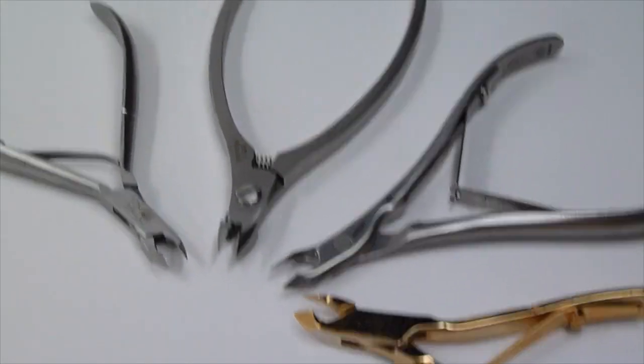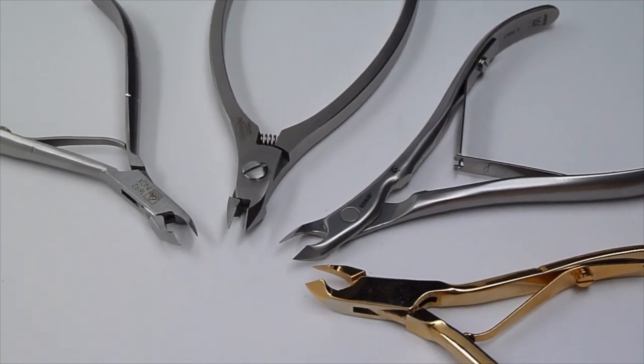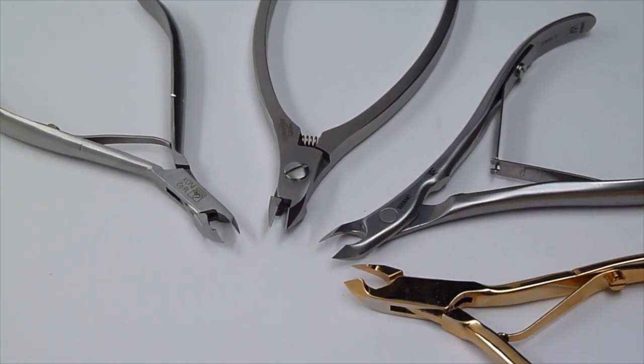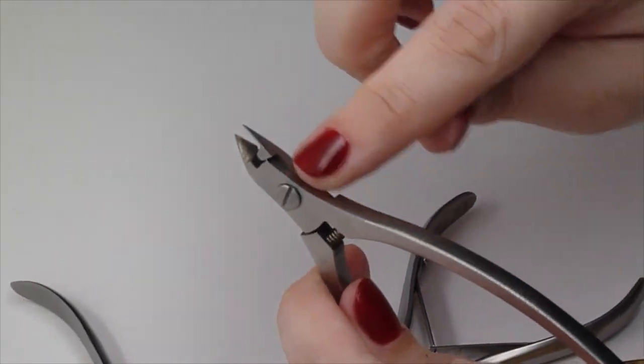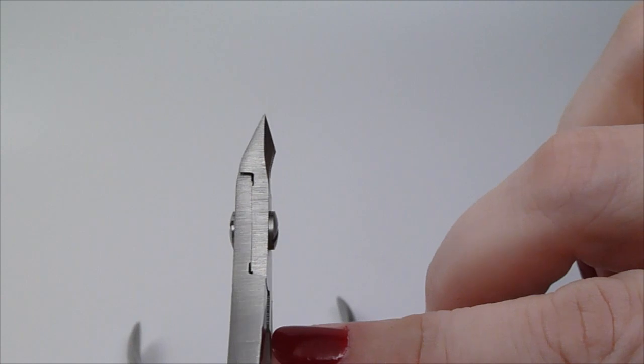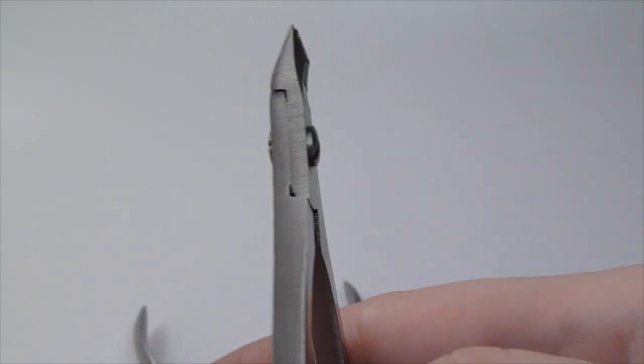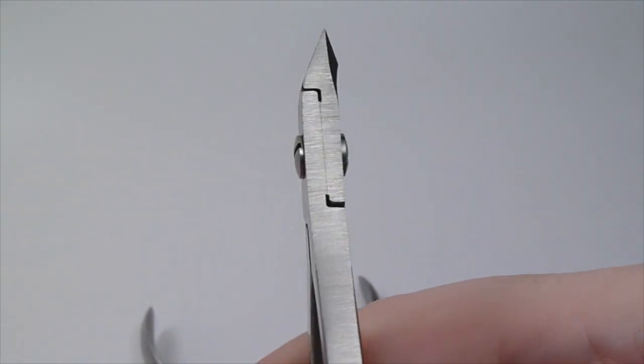So the first thing you need to know about cuticle nippers is the joint type. There are two basic types, lap and box. Now a lap joint is a traditional joint where two halves of the nipper overlap. It's been around for centuries, it's durable, and it works really well.